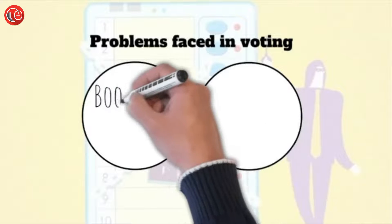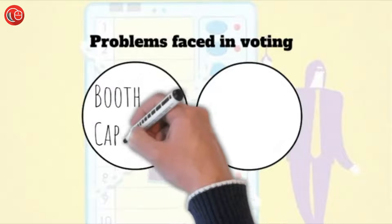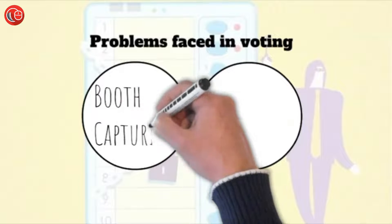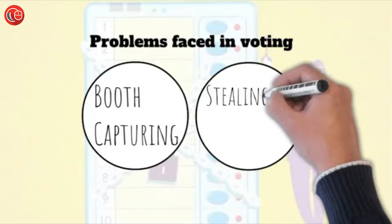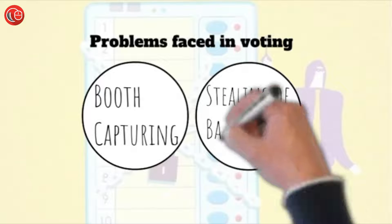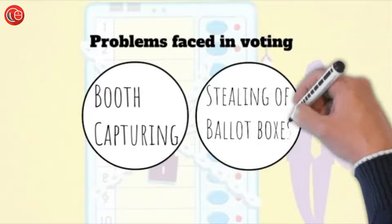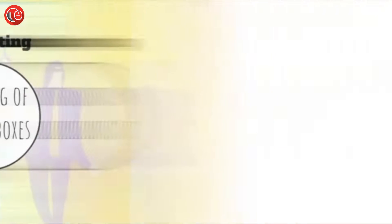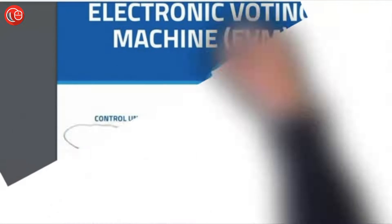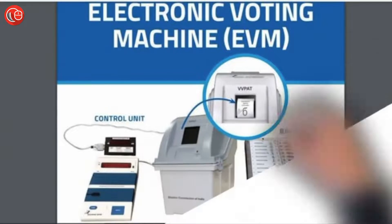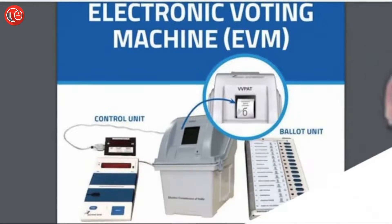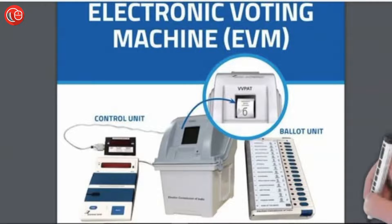But the greed of getting elected and having power by some election candidates gave rise to scenarios like booth capturing and stealing of ballot boxes. Hence, to tackle this problem of booth capturing, the legislature started a more secure medium — the electronic voting machine, also known as the EVM.